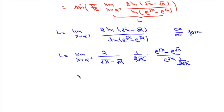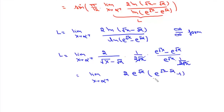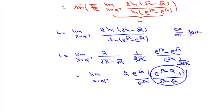Taking e to the power root alpha common, we can write this as the limit as x tends to alpha positive of 2 times e^√α times (e^(√x − √α) − 1) divided by (√x − √α), over e^√x. This is the standard limit (e^x − 1)/x as x tends to 0, which equals 1. And e^√α over e^√α is 1, so the value of this limit L is 2.